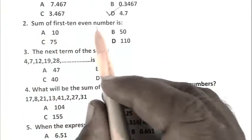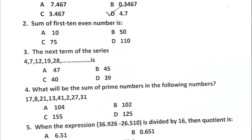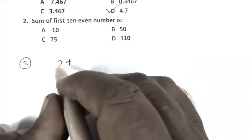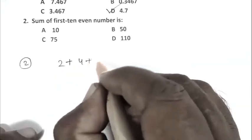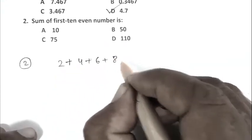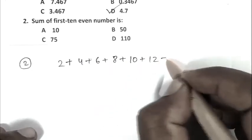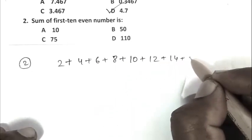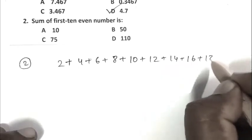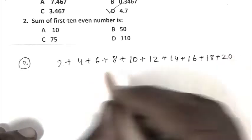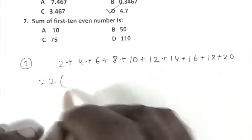Question number 2: Sum of first 10 even numbers. We can write 2 plus 4 plus 6 plus 8 plus 10 plus 12 plus 14 plus 16 plus 18 plus 20.